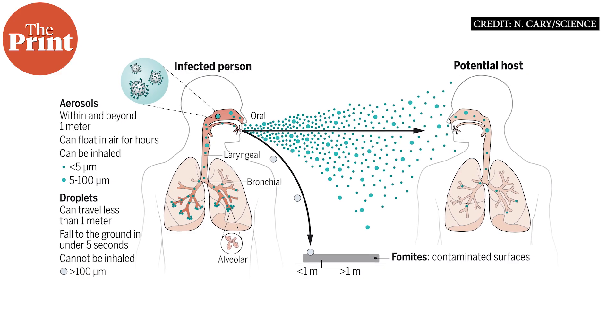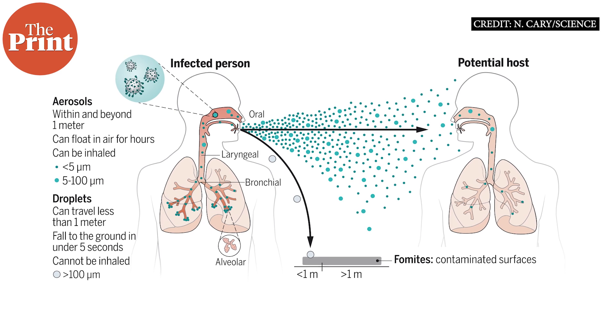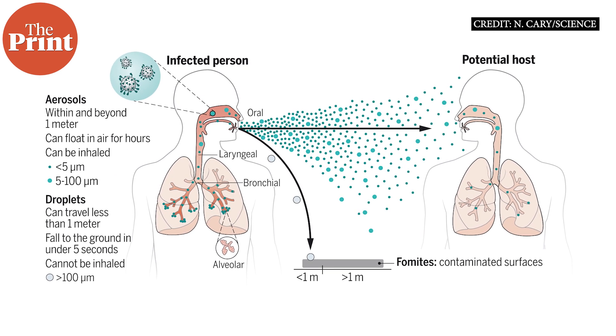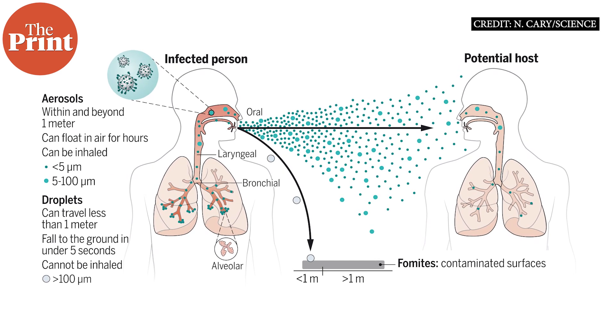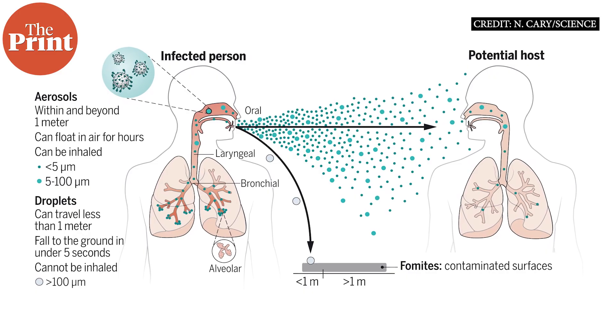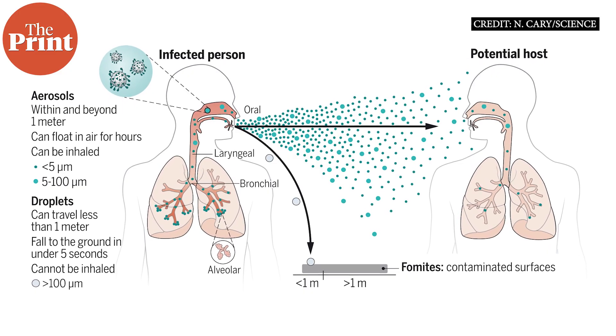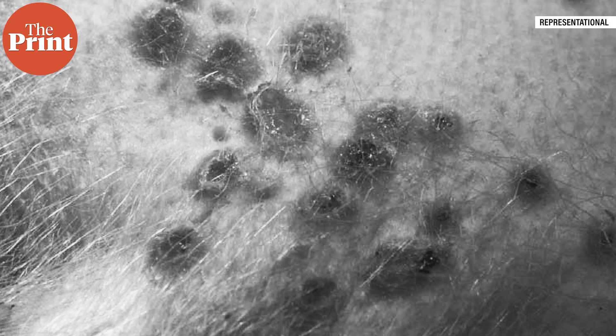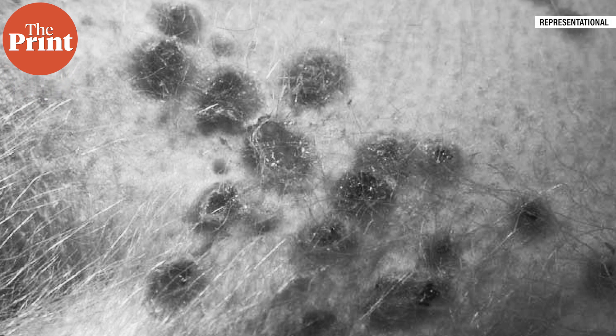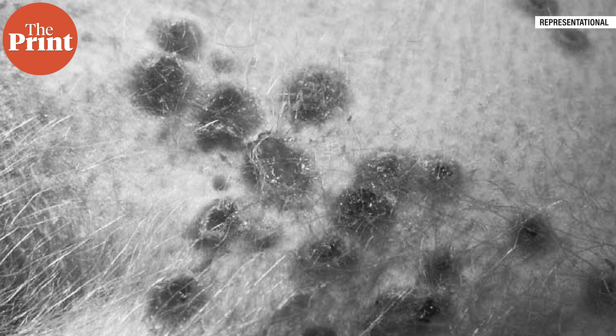Monkeypox can be transmitted by droplet exposure — that is, through large droplets exhaled by an animal — and by contact with infected skin lesions or contaminated materials. The incubation period of monkeypox is usually 6 to 13 days, but can range from 5 to 21 days. The symptoms of the disease usually resolve on their own within 2 to 3 weeks.